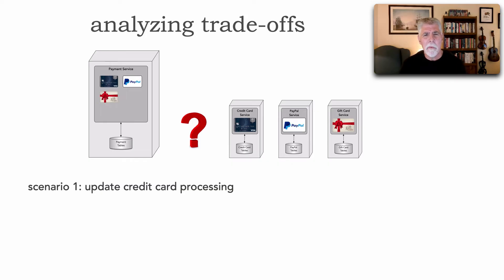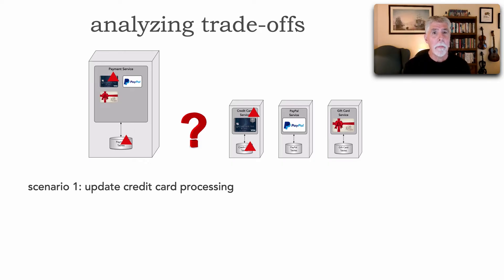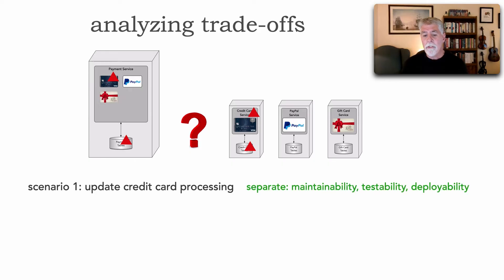In the first scenario, we expect a lot of updates to our payment types — say, credit card processing. In a single payment service, I'd have to update the code and possibly the database, resulting in a larger testing scope and more deployment risk. Whereas, if we separate them, we've consolidated just that payment type in its own service — easier to maintain, easier to test, more completeness of testing, less testing scope, less deployment risk, and a lot less ceremony to deploy. Separating gives us great maintainability, testability, and deployability.